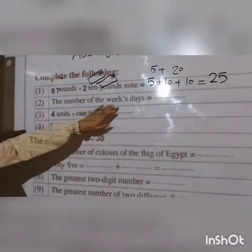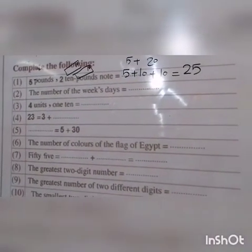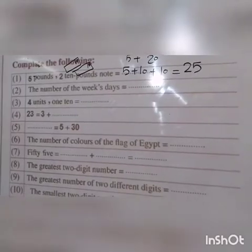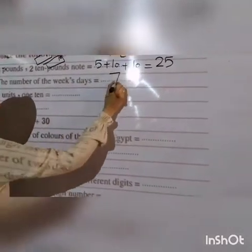Number two: the number of days of the week. How many days of the week? We have seven days of the week.